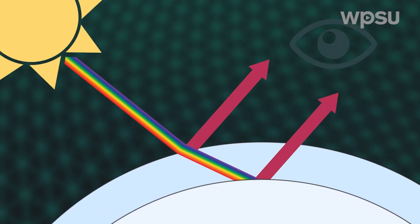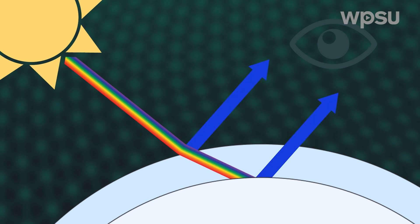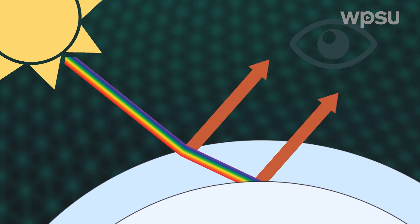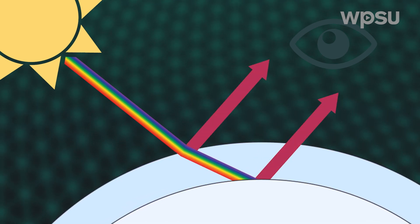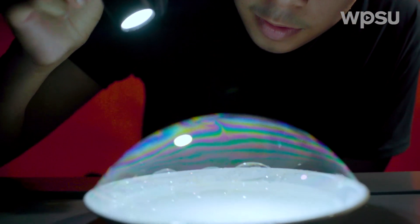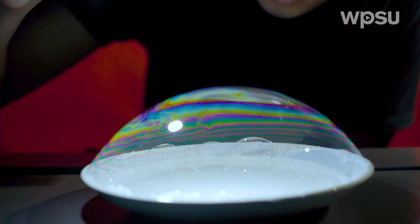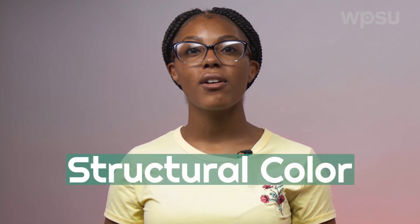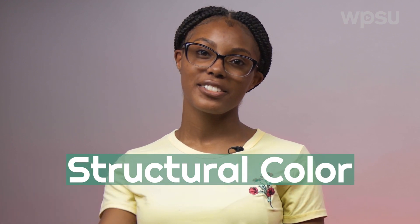If the light goes through a thicker part of the bubble, it gives you a different color than the thinner part of the bubble. Just blow on it and watch the colors change. This idea of color coming from a material structure is something that happens all the time in nature. Scientists call this structural color.